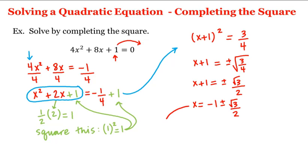And know that this means we have two solutions to this equation. We have x equals negative 1 plus the square root of 3 over 2, or x equals negative 1 minus the square root of 3 over 2.